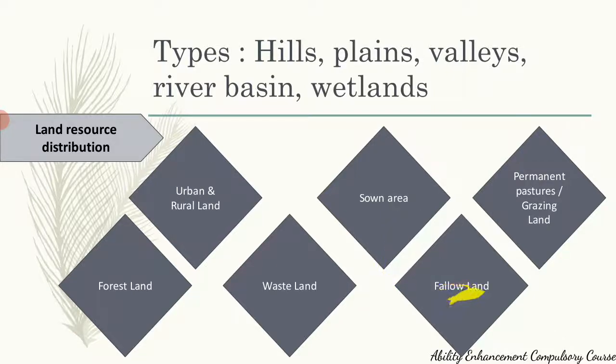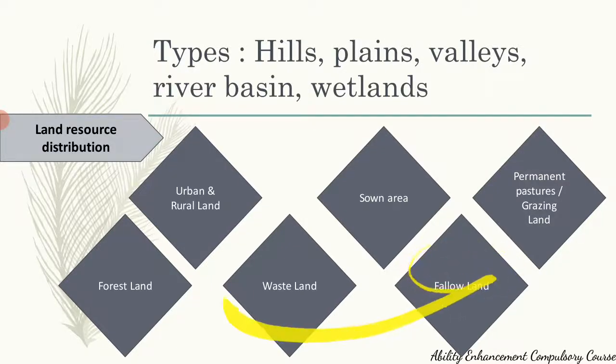We also have fallow land. Fallow land is arable — meaning you can cultivate crops there and it is not devoid of fertility — but currently it is not being used for crop cultivation. Apart from these, we can also have permanent pastures and grazing land. These are the different types of distribution of the land resource.